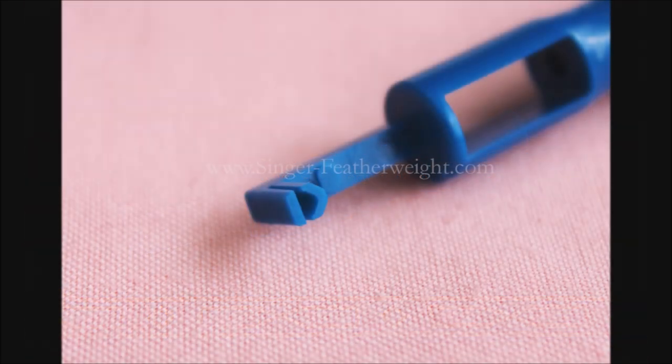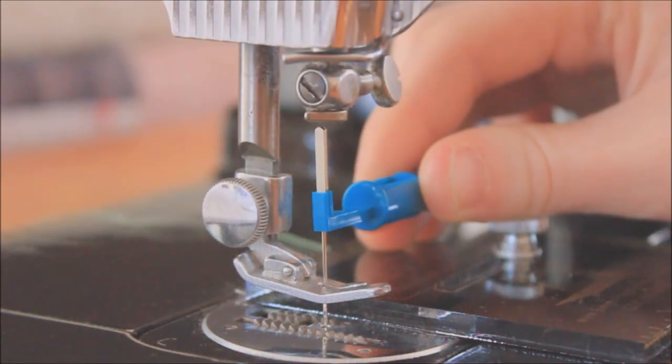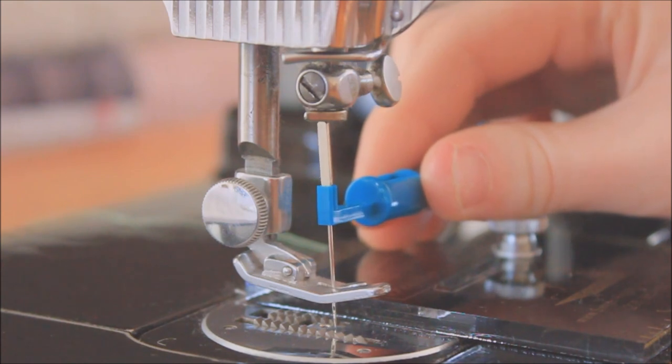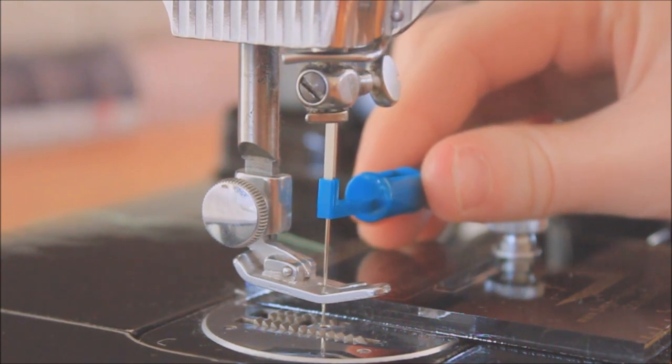To insert a needle in the needle clamp on the machine, first place the needle in the hole on one end of the needle inserter, making sure the flat side of the needle shaft face is left. This will help hold the needle steady for you as well.